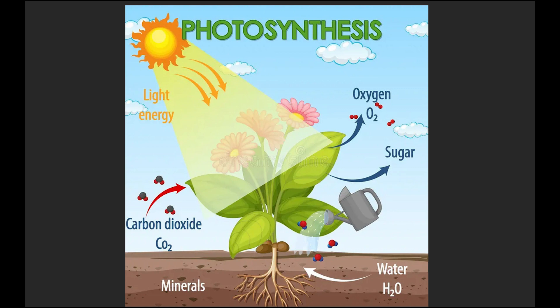1. Photosynthesis is the process by which plants convert light energy from the sun into chemical energy in the form of sugars. This process takes place in the leaves, where chlorophyll, a green pigment, captures sunlight and combines it with carbon dioxide (CO2) from the air and water (H2O) from the roots to produce glucose and oxygen. This glucose serves as the plant's food and energy source for growth and development.